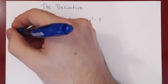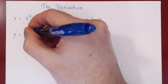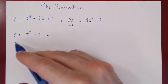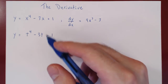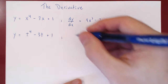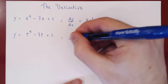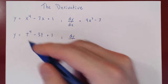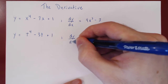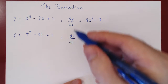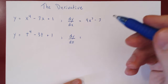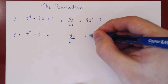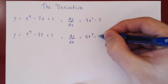What if we had y equal to t to the 4 minus 3t plus 1? Now y is a function of t, so if you differentiate y, you differentiate no longer with respect to x, but with respect to t — dy over dt. The fact that we change the variable changes nothing; we still apply the same rules of differentiation. So we get 4t cubed minus 3.